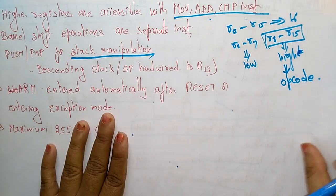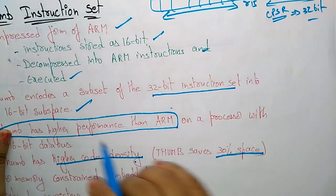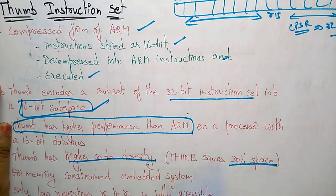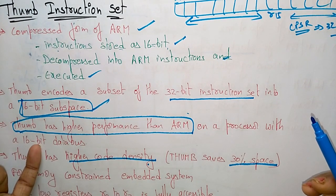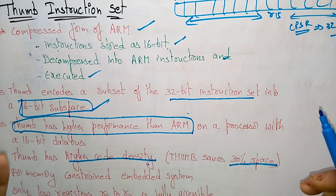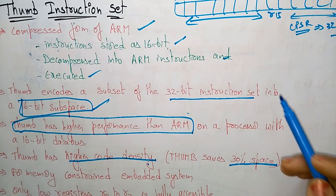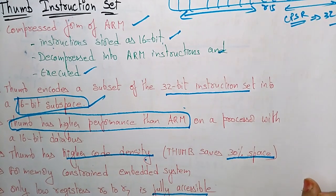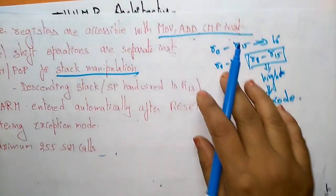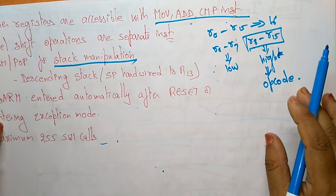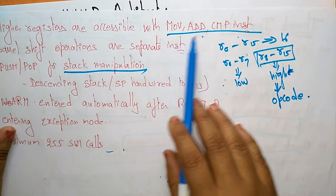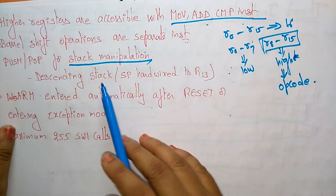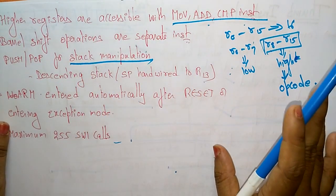To summarize the Thumb instruction set: it encodes a subset of the 32-bit instruction set into a 16-bit subspace. It has higher performance than ARM on a 16-bit data bus. R0 to R7 are fully accessible low registers. R8 to R15 are high registers reserved for op codes like move, add, and compare. R13 is reserved for stack manipulations.